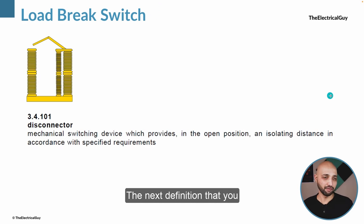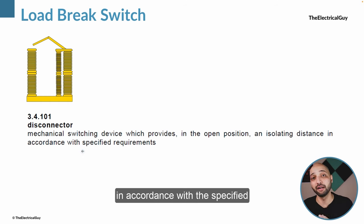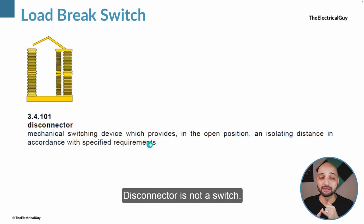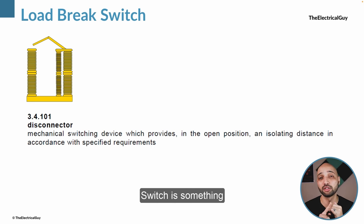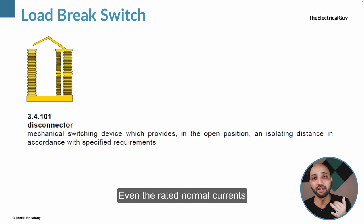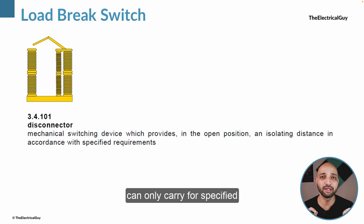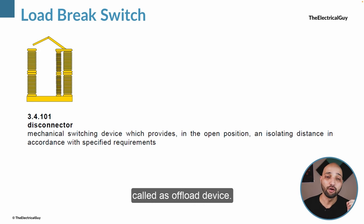The next definition you should understand is a disconnector. IEC says a disconnector is a mechanical switching device which provides, in the open position, an isolating distance in accordance with specified requirements. Importantly, a disconnector is not a switch. A switch can carry, make, and break current. Disconnectors are not capable of doing any of those things — even rated normal currents they cannot make or break. They can carry current but cannot make and break it. Even for short circuit currents they can only carry for specified time limits. That is why it is called an off-load device.